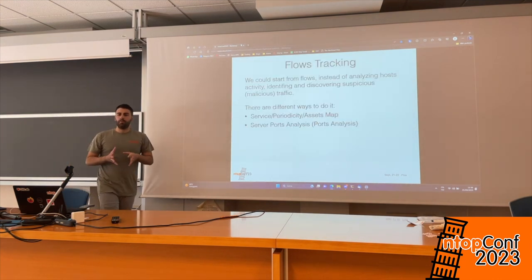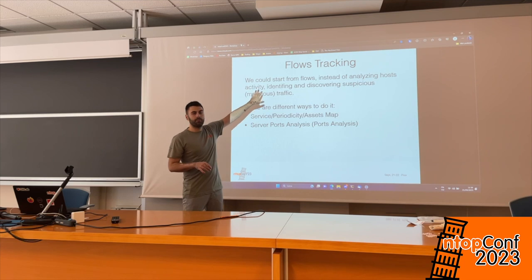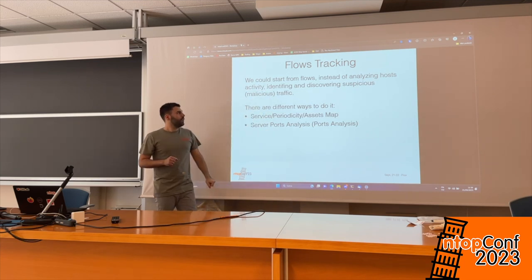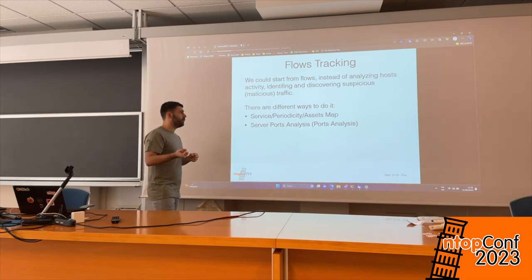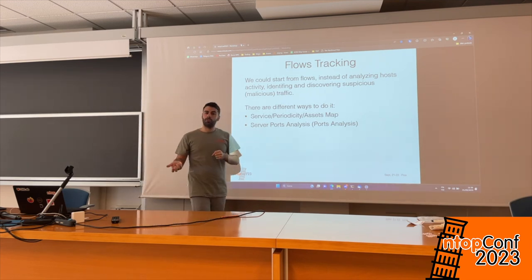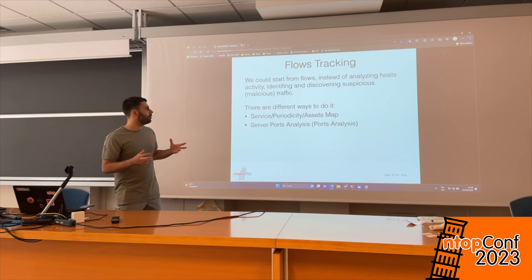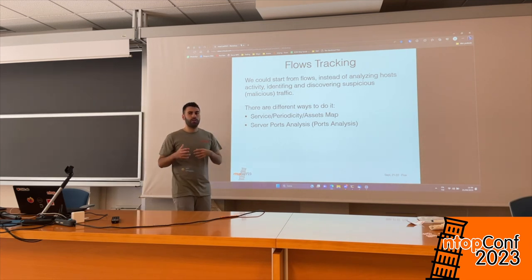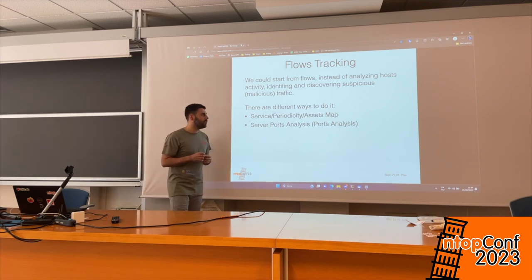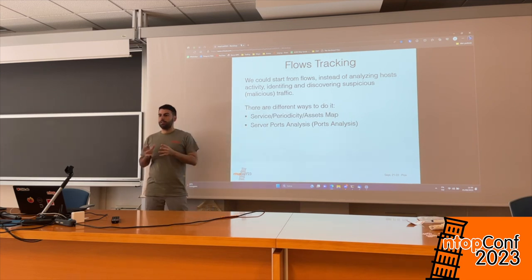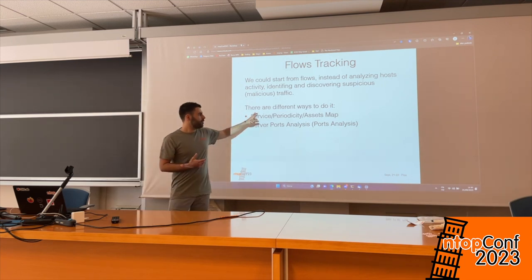Lastly, let's talk about the flows. By analyzing and searching for problems in the flows, we can start looking not just at hosts but at suspicious traffic. Many times we see a lot of suspicious traffic by taking a look at flows. There are different ways to do that. First of all, let's start looking at the maps. We have three different maps: the service map, the periodicity map, and the asset map.